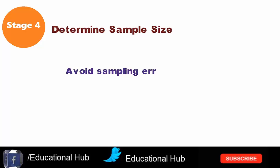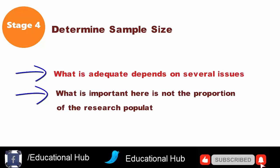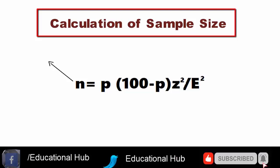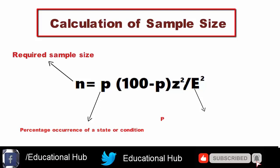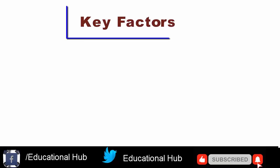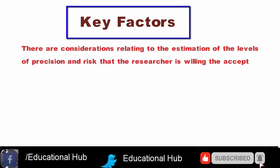Stage 4: Determine sample size. In order to generalize from a random sample and avoid sampling errors or biases, a random sample needs to be of adequate size. What is adequate depends on several issues. There are numerous approaches, incorporating a number of different formulas, for calculating the sample size for categorical data. For example: N = P(100-P) × Z² / E², where N is the required sample size, P is the percentage occurrence of a state or condition, E is the percentage maximum error required, and Z is the value corresponding to the level of confidence required. There are two key factors to this formula: first, considerations relating to the estimation of the levels of precision and risk that the researcher is willing to accept; second, the estimation of the variance or heterogeneity of the population.